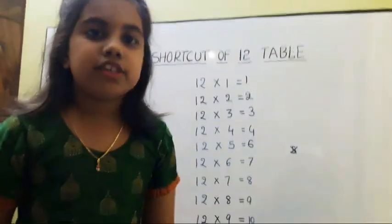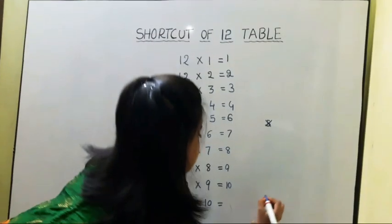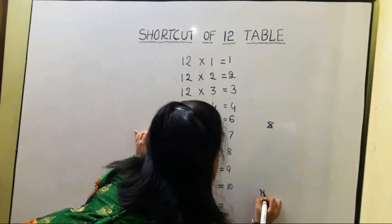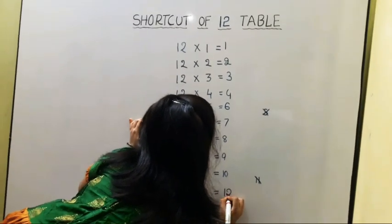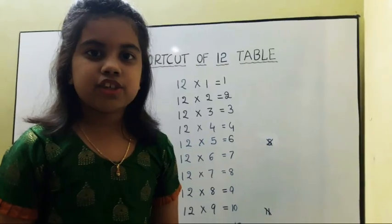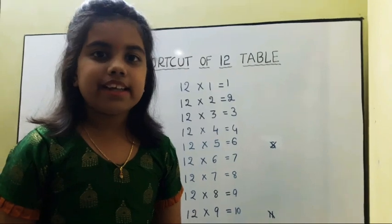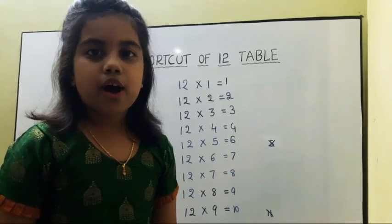Again we should skip 11. We should write 12. Next we should write 2 to 8 even numbers from top to bottom.